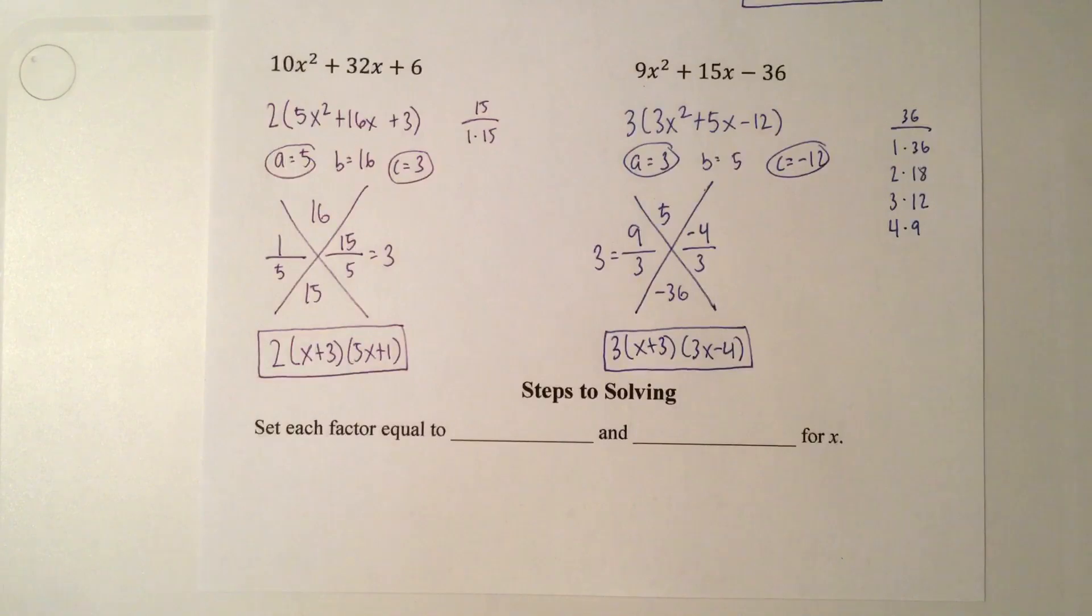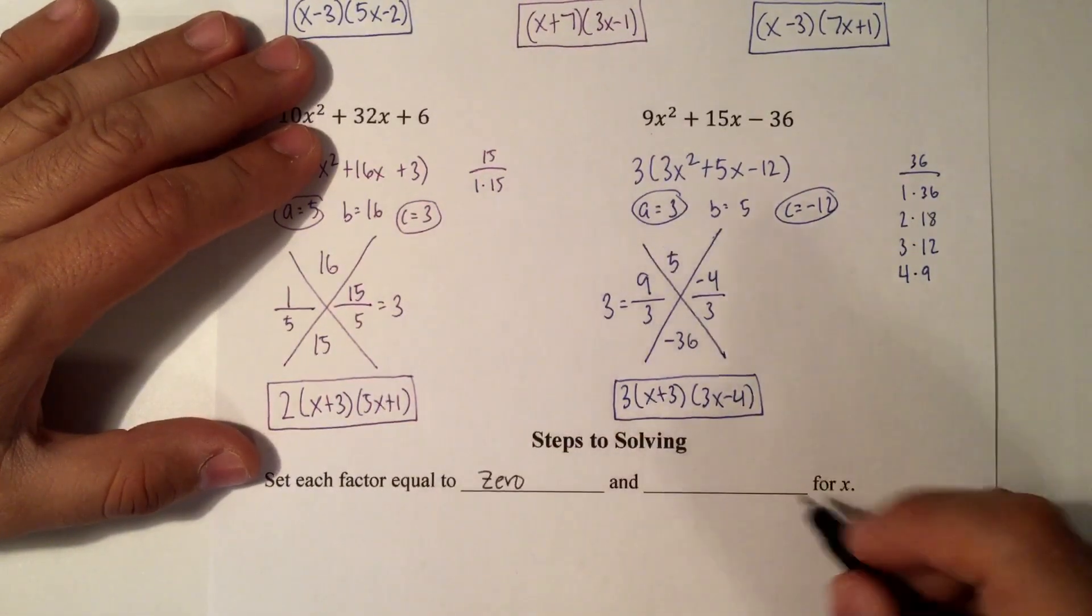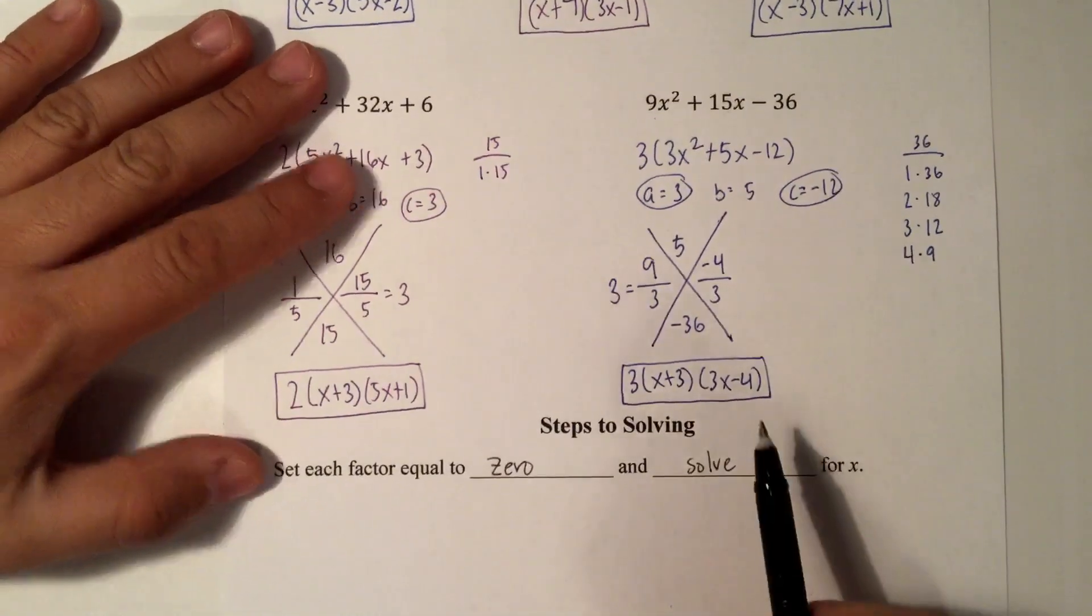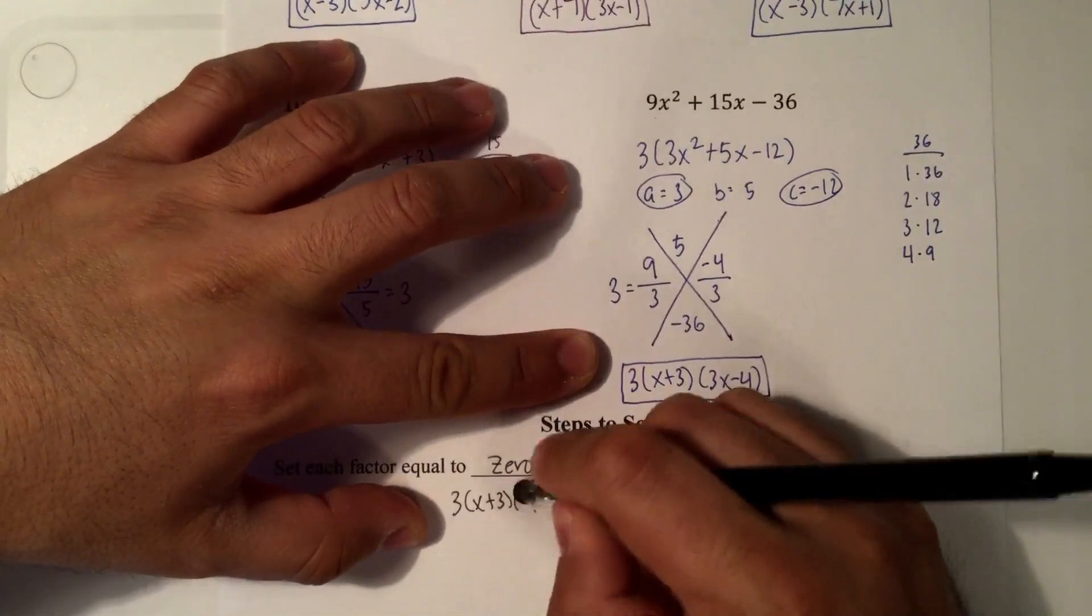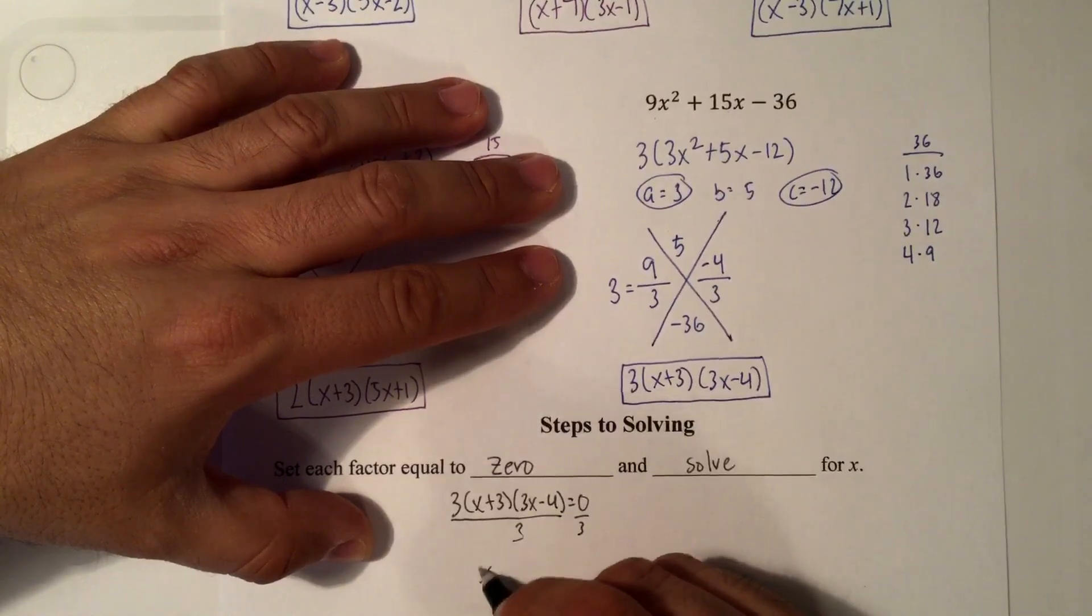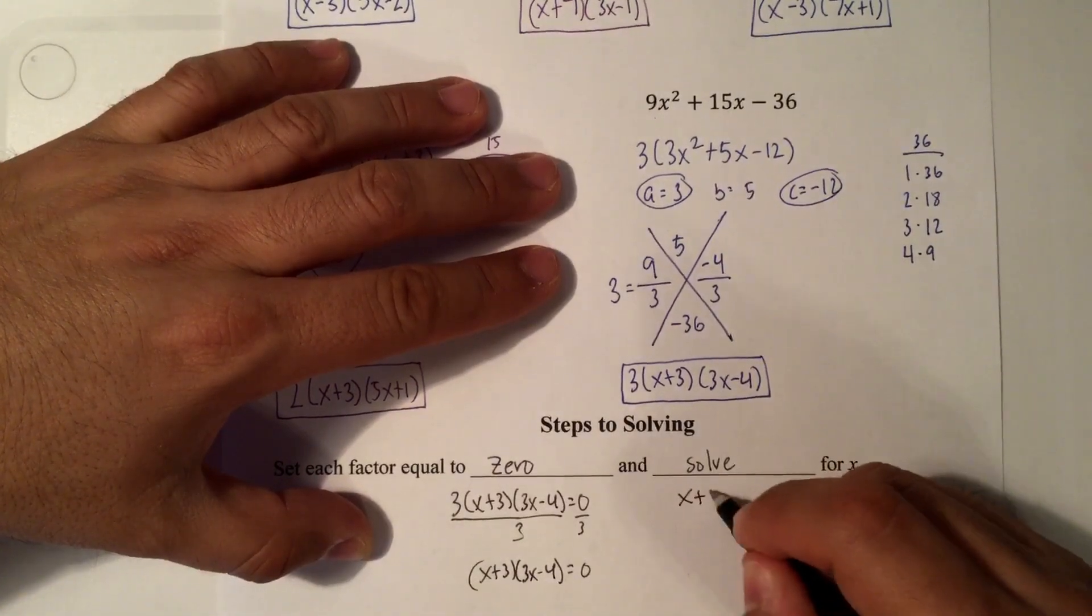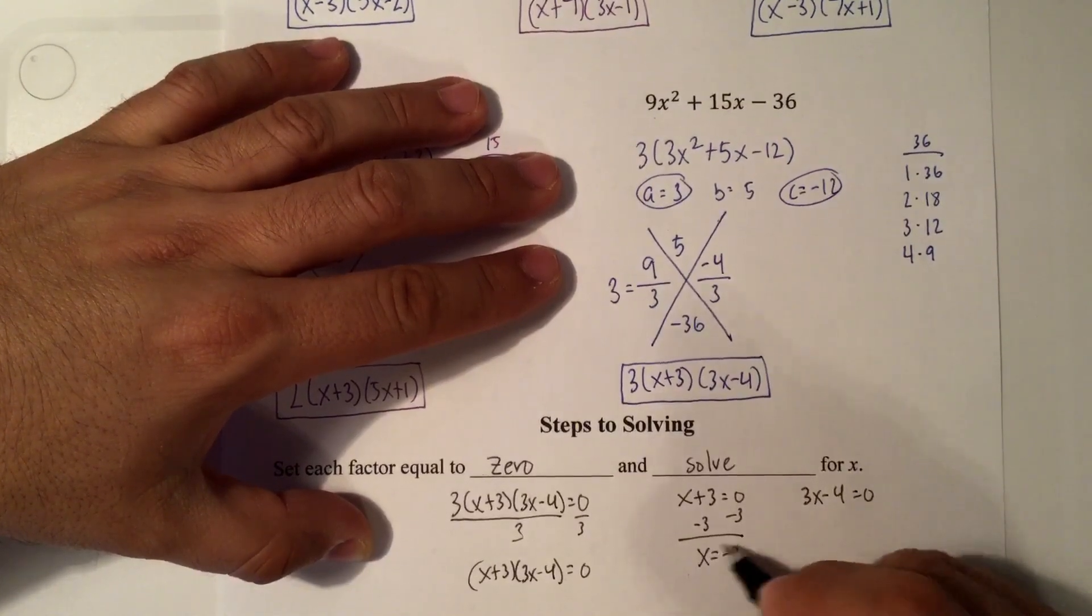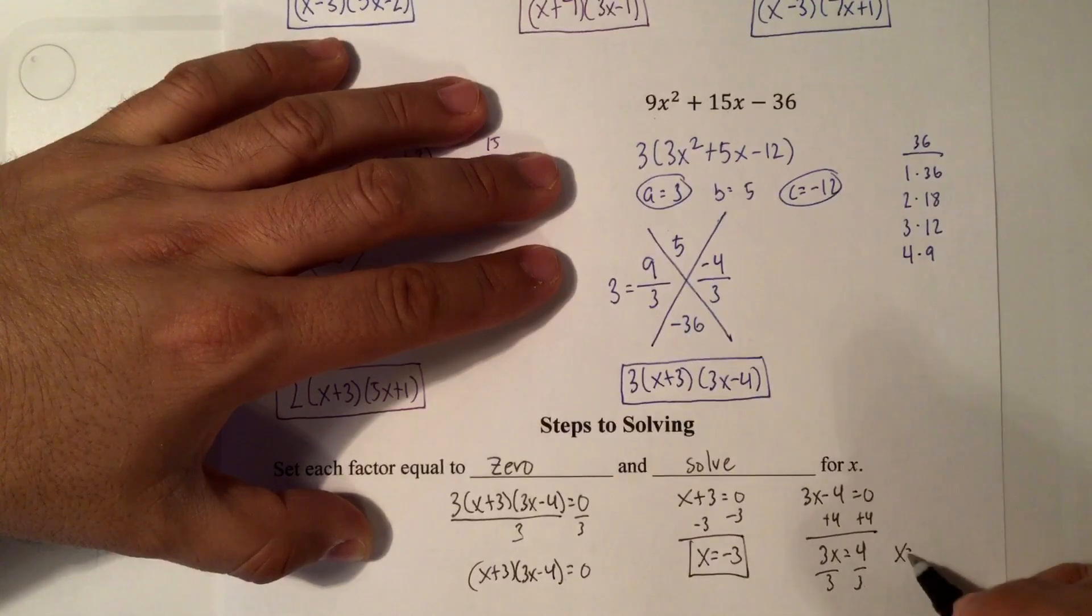The last thing I wanted to talk about was the steps to solving. Pretty much, once you factor everything, you can actually solve it pretty easily. Set each factor equal to 0 and solve for x. In order to set it equal to 0, it actually has to have a variable, the letter x or whatever variable you're solving for. So let's just take this example right here. 3 times x plus 3 times 3x minus 4 equals 0. This 3 right here, we can't do anything with it. You could literally divide it at the very beginning. And then you're left with x plus 3 times 3x minus 4 is equal to 0. So now we set each of these factors equal to 0. x plus 3 equals 0. 3x minus 4 is equal to 0. And we solve for x. So this one, I subtract 3 from both sides. x equals negative 3. This one, we add 4. So 3x is equal to 4. To isolate x, we divide by 3. And x equals 4 thirds.